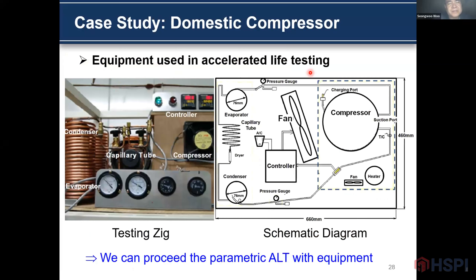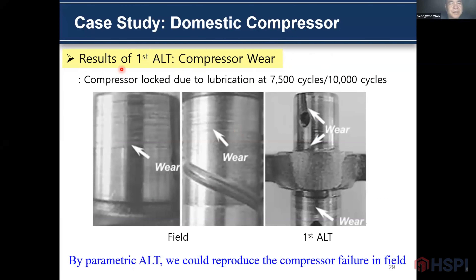This is the equipment used for ALT testing. This is the test jig, and this is the schematic diagram of the test jig. We can perform the parametric ALT with this equipment. This is the result of the first parametric ALT: the compressor locked due to lubrication failure at 7,000 and 10,000 cycles. This is the field photo and the first parametric ALT result. We found a lot of wear on the surface of the crankshaft. By parametric ALT, we can reproduce compressor failure seen in the field.